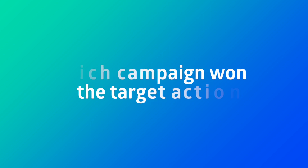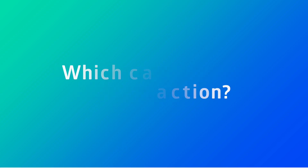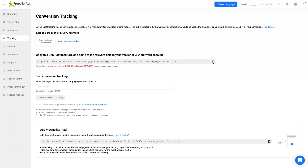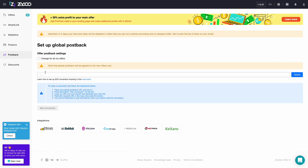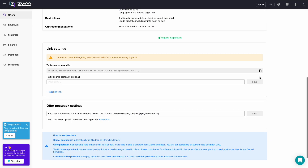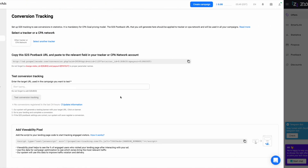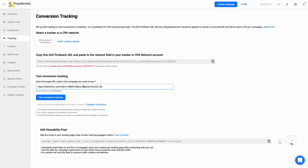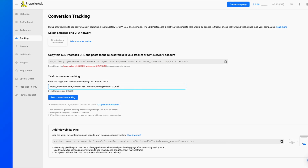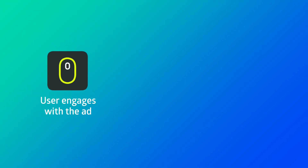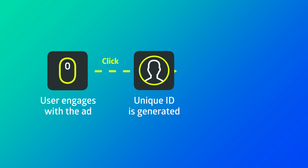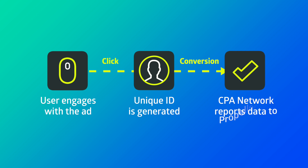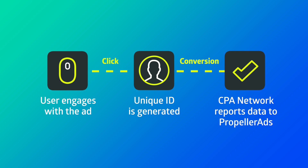Without tracking, you won't know which campaign won the target action. To be aware of that data, you should copy the post-back URL from Propeller Ads and insert it into your CPA network, and vice versa — copy the CPA network target URL and insert it into your Propeller account. And don't forget to change the tokens for those that correspond to your CPA network parameters. This way, Propeller Ads gets data about the concrete offer from the CPA network. When the post-back URL is used, each offer gets a unique click ID, which marks the received impression or conversion.